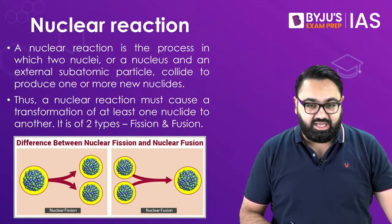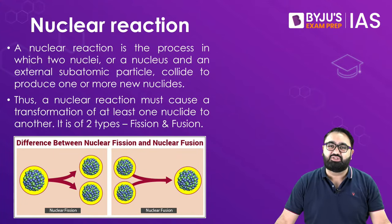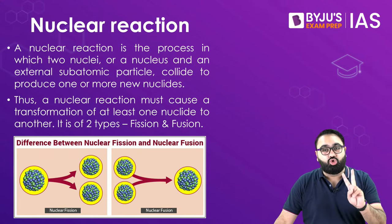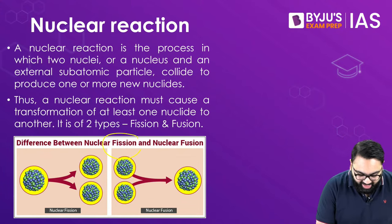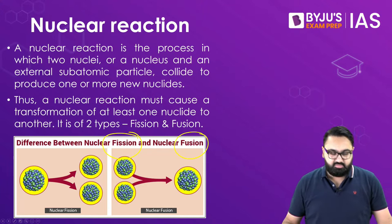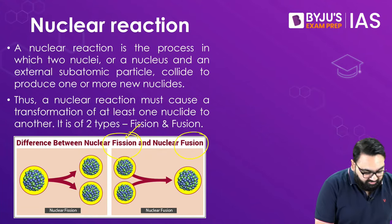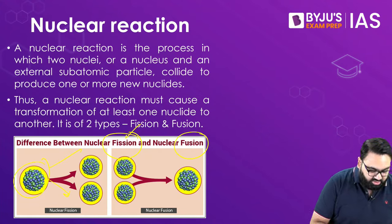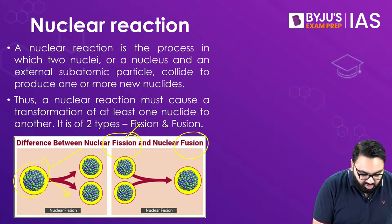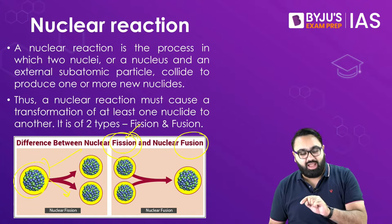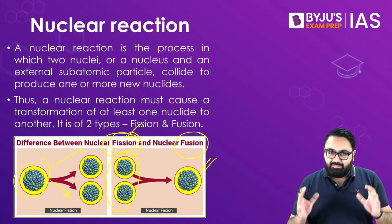The first thing we will be discussing is Nuclear Fusion. I'm sure all of you would have read about Nuclear Reactions since you were in school. There are mainly two types of Nuclear Reactions: Nuclear Fission and Nuclear Fusion. The main difference is that Nuclear Fission is a reaction where one big nucleus is broken into two parts. Nuclear Fusion, on the other hand, is when two small nuclei are combined together to form a bigger nucleus. That is the main difference between the two.